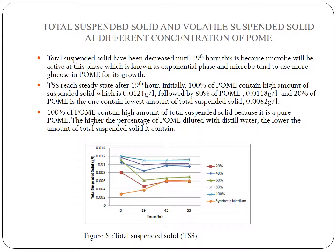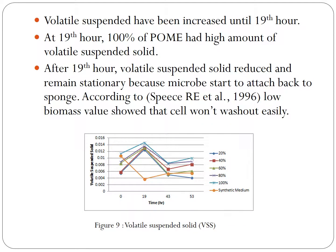Next, total suspended solid and volatile suspended solid at different concentrations of POME. TSS decreased until the 19th hour because microbes are active during the exponential phase and use more glucose in POME for growth. 100% of POME contains the highest amount of TSS as it is pure POME; the higher the POME is diluted with distilled water, the lower the total suspended solid content. For volatile suspended solid, it increased until the 19th hour, when 100% of POME had the highest VSS. After the 19th hour, VSS reduced and remained stationary because microbes started to attach back to the sponge, confirming that cells do not wash out easily.